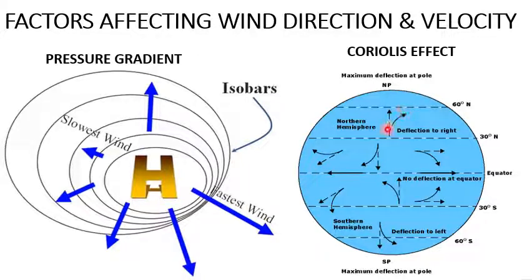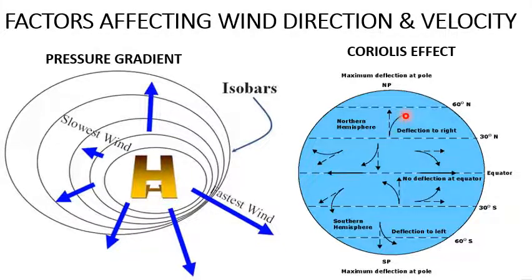This arrow is showing the actual movement of the wind, and this arrow is showing the deflected movement. So, this is what the Coriolis effect is.